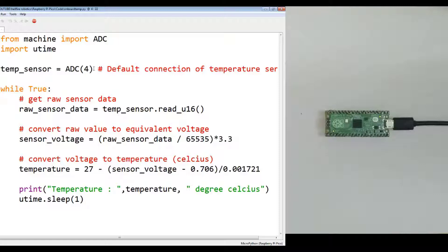First let me show you the demonstration of this and then I will explain the code. In this case there is no circuit, you just have to connect your Raspberry Pi Pico to the USB cable or to some power source.